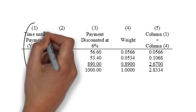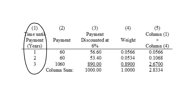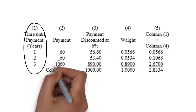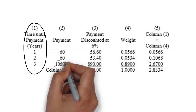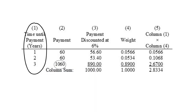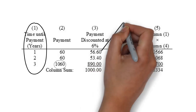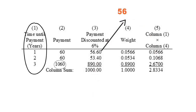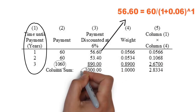column 1 shows 3 time periods. Coupon payments are in column 2. Note that last year's payment is 1060, which includes both coupon and principal. In column 3, we discount each of these coupon payments by 6% YTM. The sum is 1000, which is the bond price.